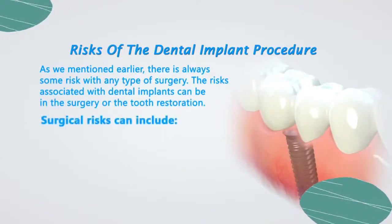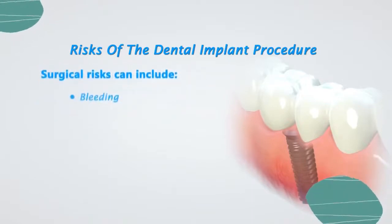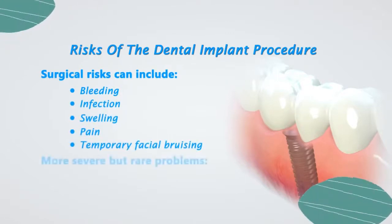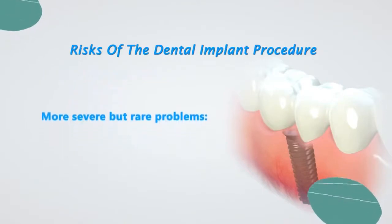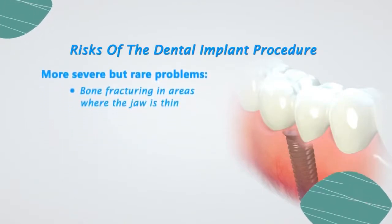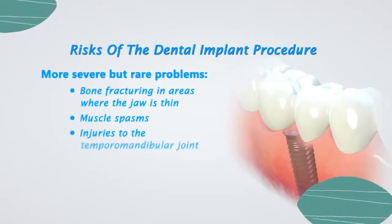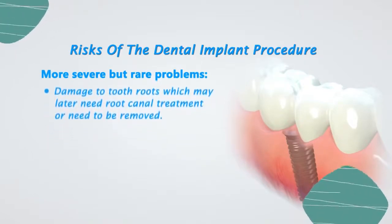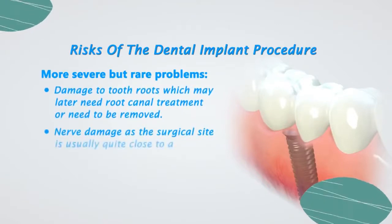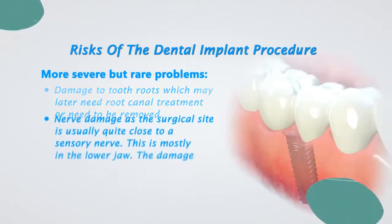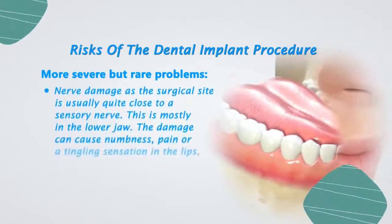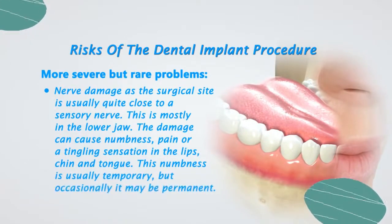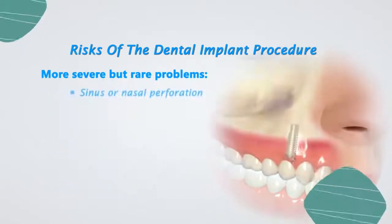The risks associated with dental implants can be in the surgery or the tooth restoration. Surgical risks can include bleeding, infection, swelling, pain, and temporary facial bruising following surgery. More severe but rare problems include bone fracturing in areas where the jaw is thin, muscle spasms, injuries to the temporomandibular joint, damage to tooth roots which may later need root canal treatments or need to be removed. Nerve damage at the surgical site, usually quite close to a sensory nerve — mostly in the lower jaw — can cause numbness, pain, or a tingling sensation in the lips, chin, and tongue.